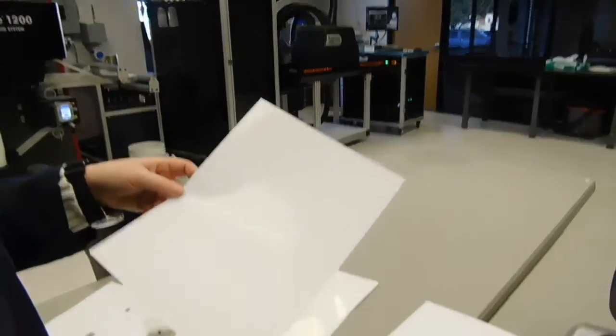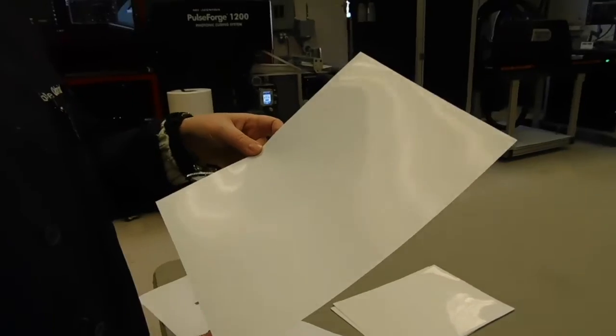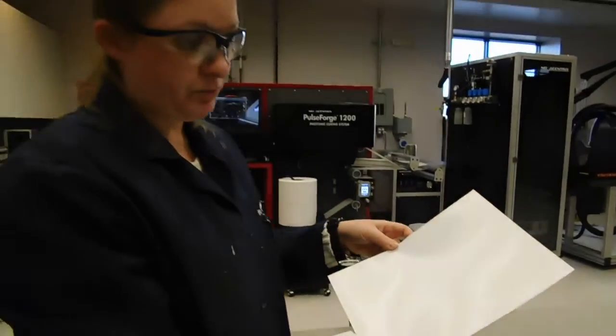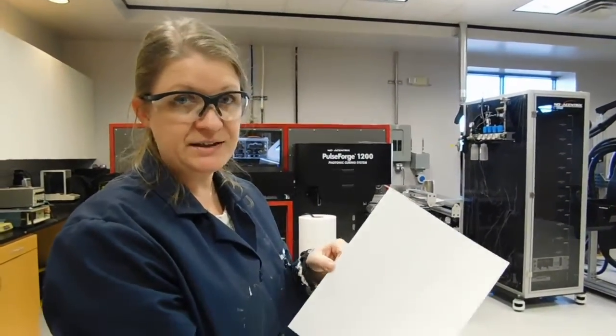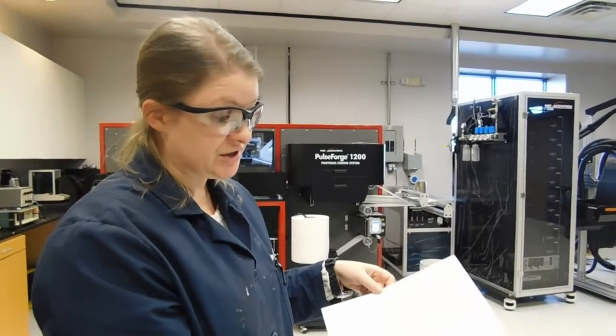The other substrate we're going to use is a glossy Epson photo paper. Once the inks are printed upon this they come out dry and already conducting.